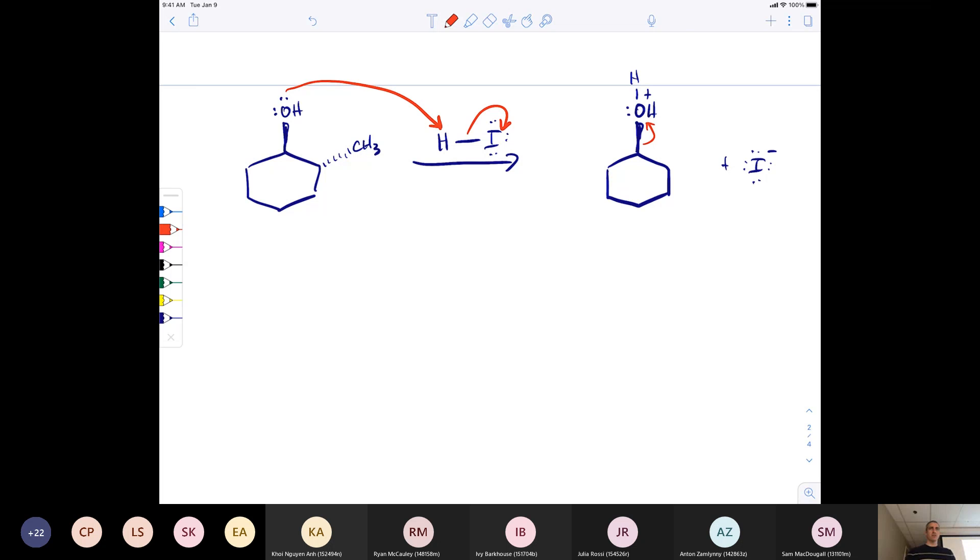That creates a new hydrogen with one lone pair left and a positive charge. Now we have iodide with four lone pairs. Next, we lose water. Why? It's a fantastic leaving group. OH minus is awful as a leaving group, but when you protonate it, it becomes really good. That leaves us with a cation here, a secondary carbocation. Carbocations are flat, they're sp2 hybridized, trigonal planar. Don't draw a carbocation with wedged bonds showing stereochemistry when there's not.